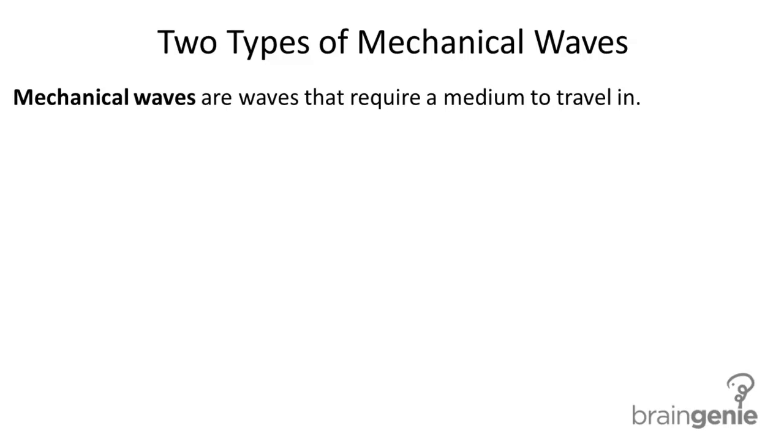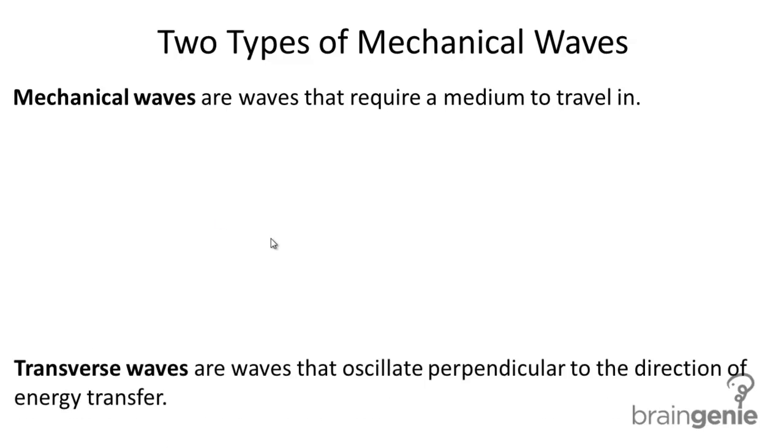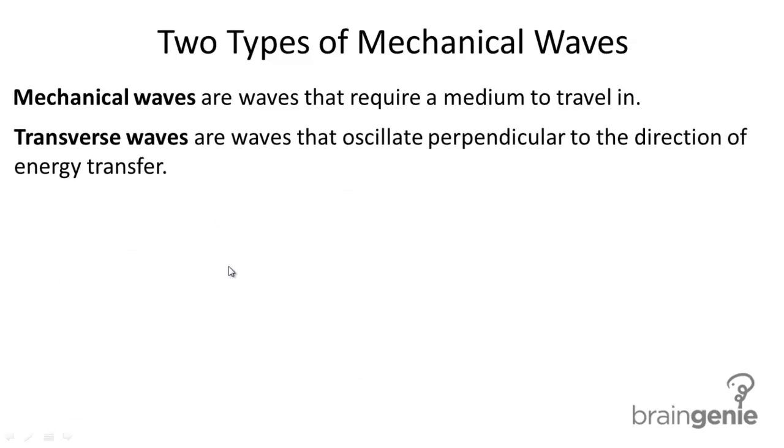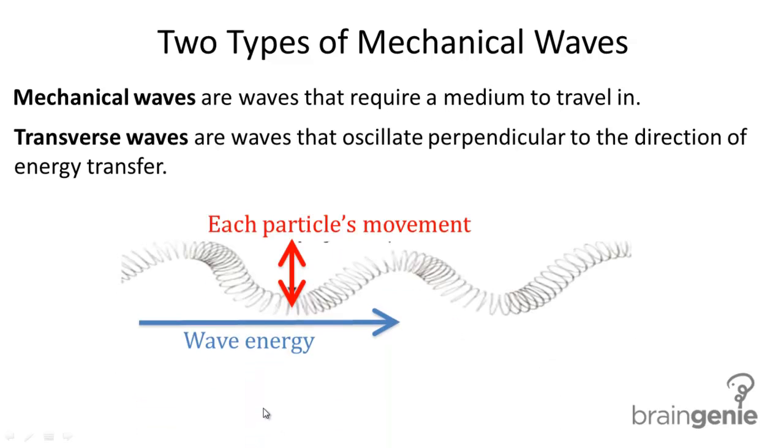The first type of mechanical wave is what we call a transverse wave. Transverse waves are waves that oscillate perpendicular to the direction of energy transfer.